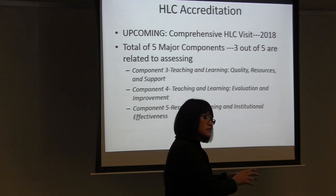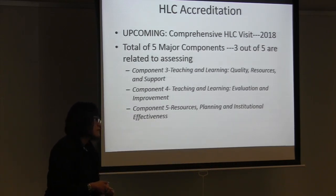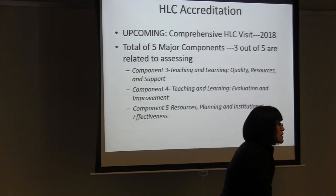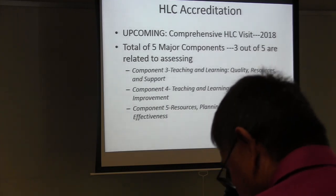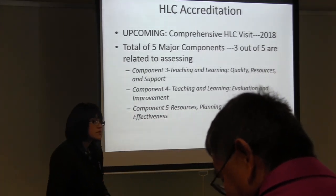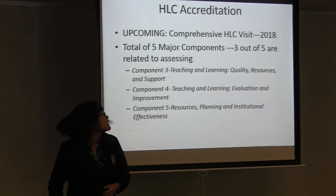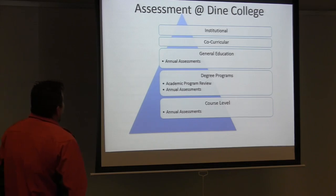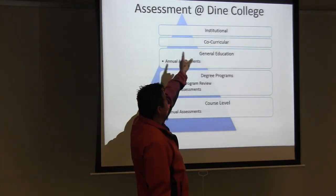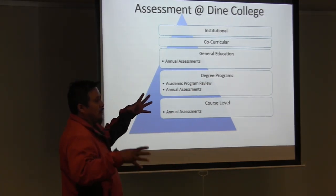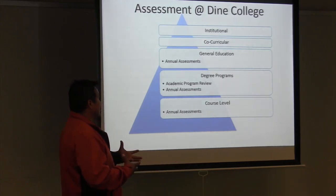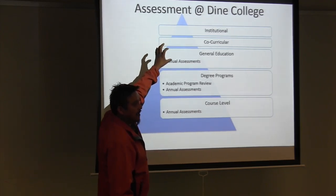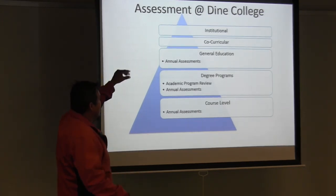Component five is resource, planning, and institutional effectiveness. This is where we do all assessments, analyze results, make changes to instruction and curriculum, and tie our long-term fiscal process to all changes we're making. We have an institutional-wide assessment process that looks at what we want students to gain in knowledge here at Benet College. To break it down, we have co-curricular activity, which is separate from what we look at in discipline and general study courses.